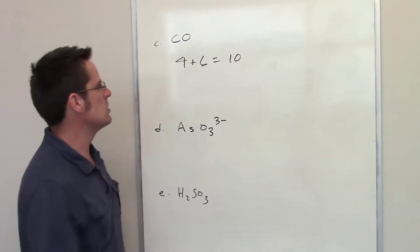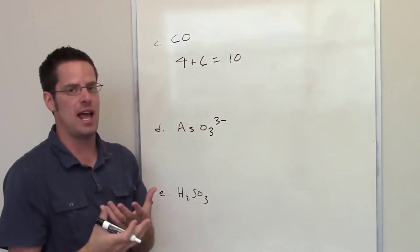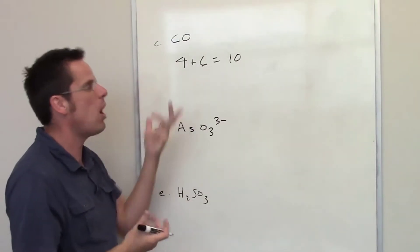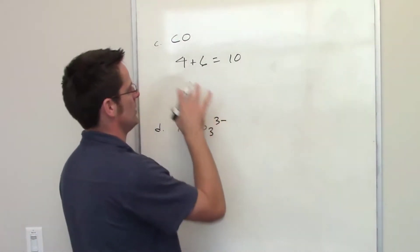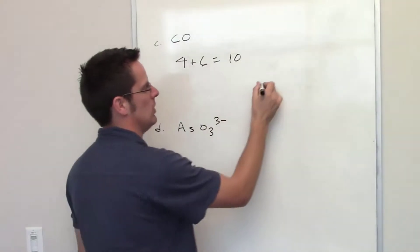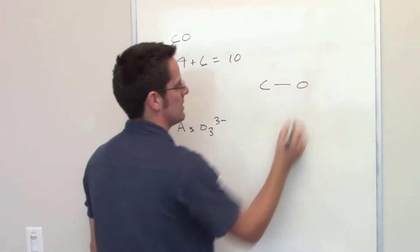Oxygen is in column 6a, so it has six valence electrons, so I have a total of ten valence electrons. The next step that you do is you try to figure out how these atoms are bonded together. Because there are only two atoms in this molecule, I can just draw a single bond between them.